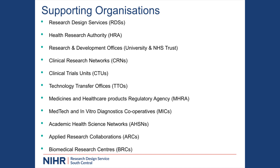Academic Health Science Networks, AHSNs, are regionally based — go and speak to your local one. They're really good at supporting getting studies up and running. ARCs — Applied Research Collaborations — and BRCs — Biomedical Research Centres — are locally based but generally have different themes they operate in. These two also have small pots of money, so if you want a little funding to build up to a larger piece of research, they might be worth approaching.